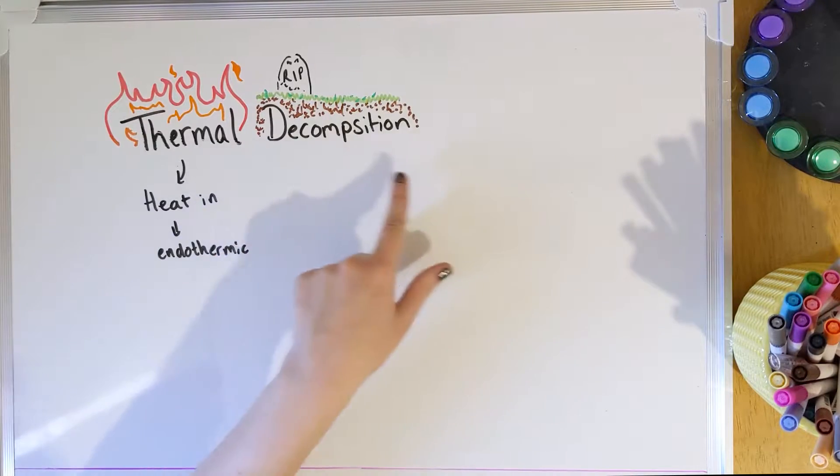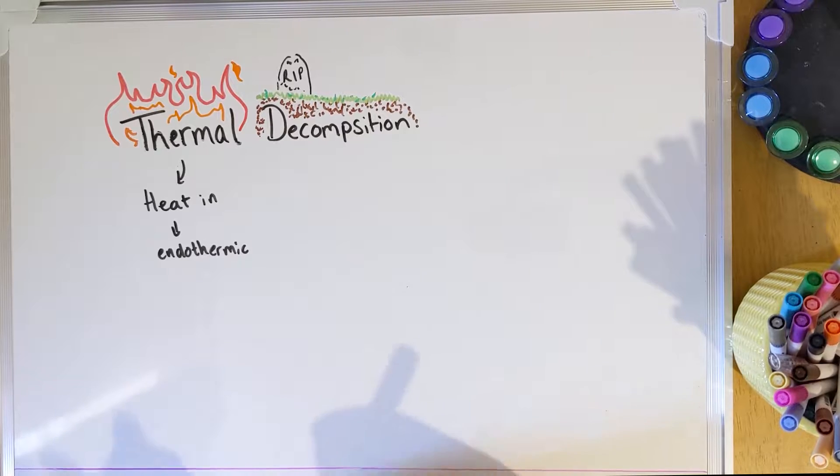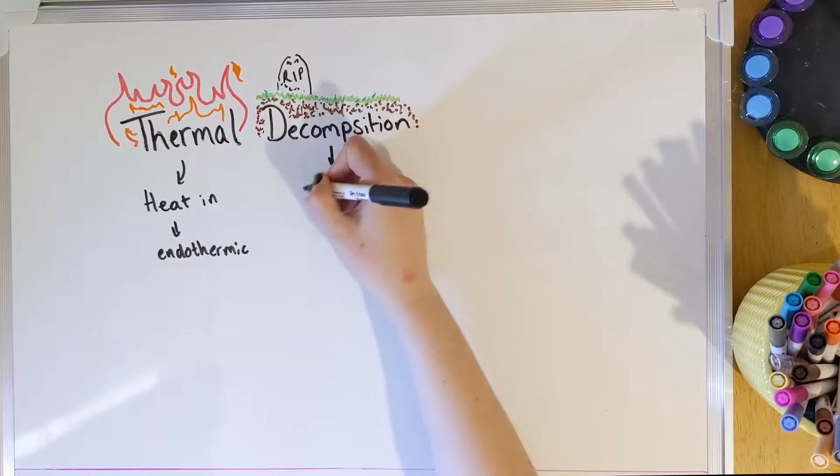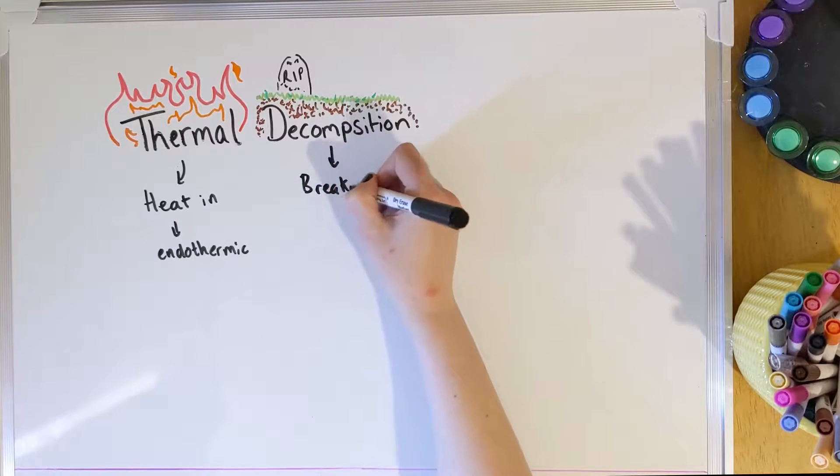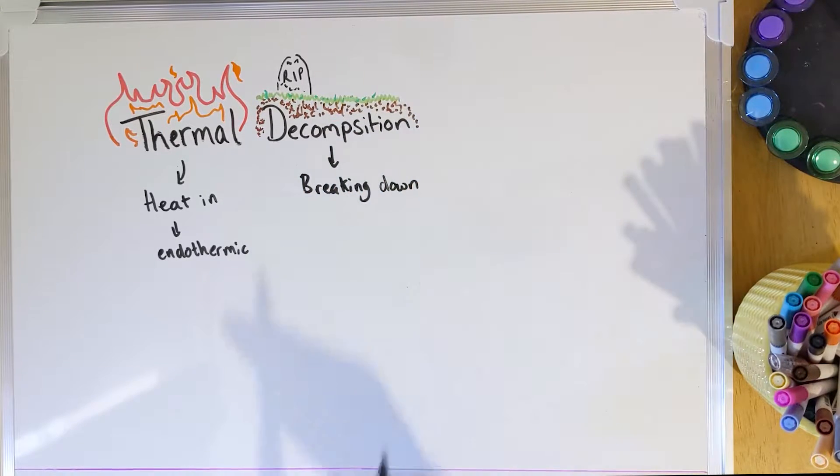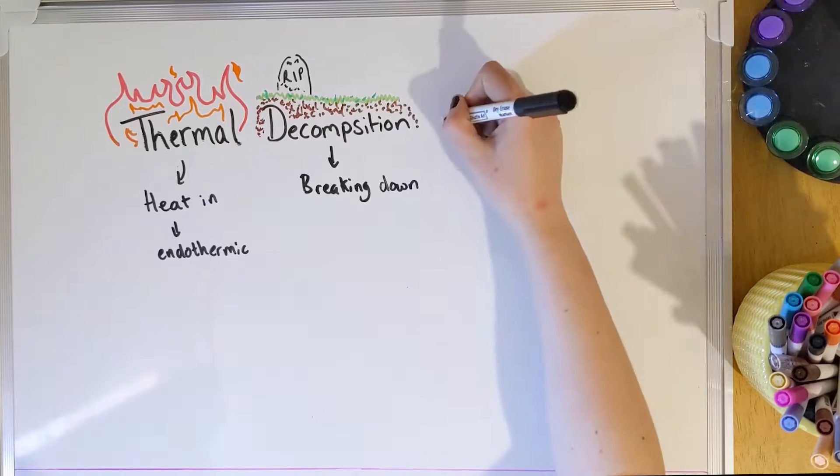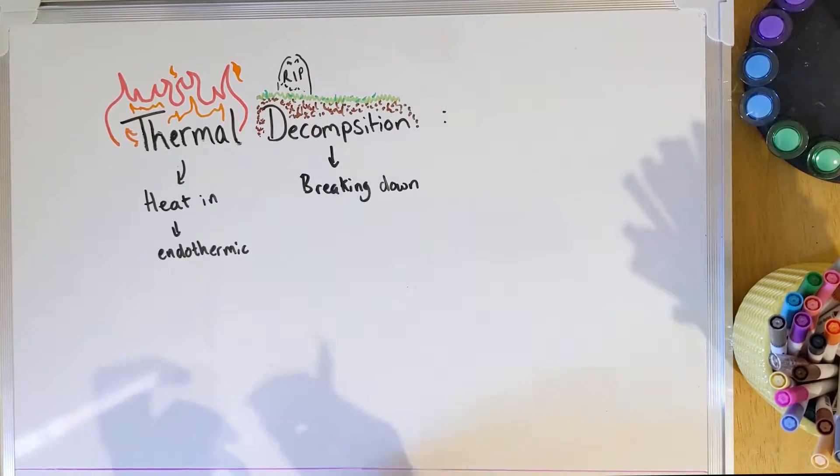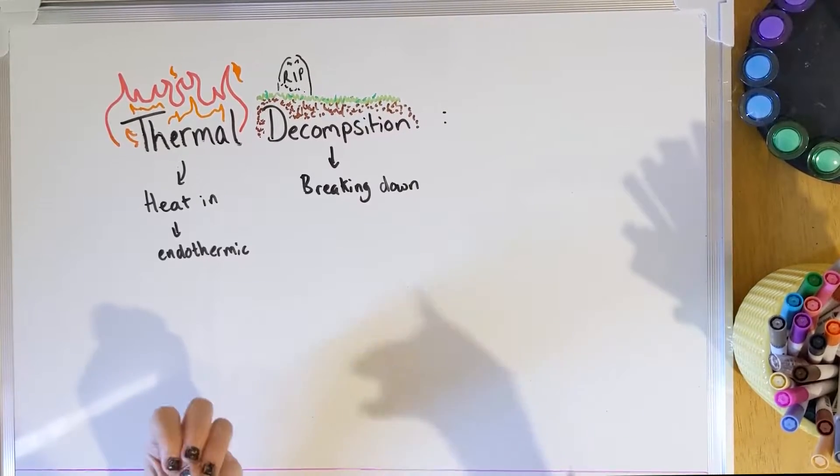And then the second part, decomposition, reminds me of decay in nature, things dying and then rotting and their nutrients going back into the soil in the great circle of life that Mufasa told us about. So decomposition just means breaking stuff down. If we put these two bits together - thermal heat going in, it's endothermic, breaking down - thermal decomposition is a reaction in which a compound gets broken down into a simpler form.